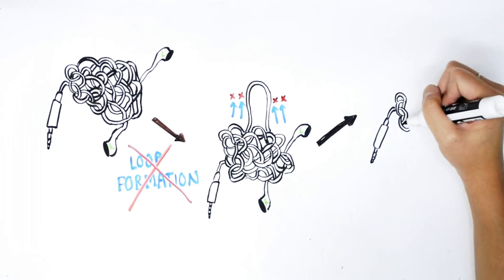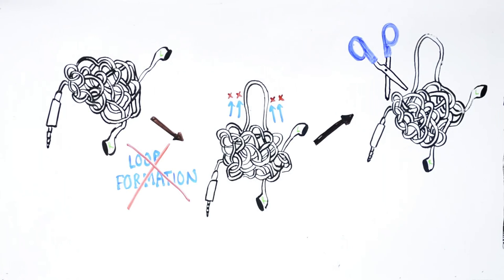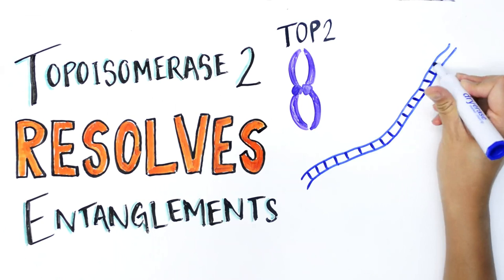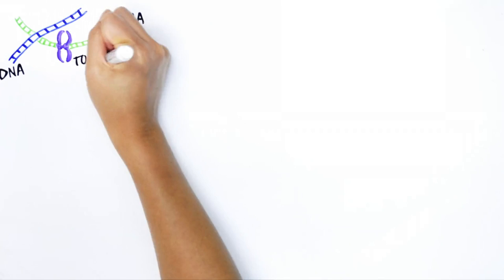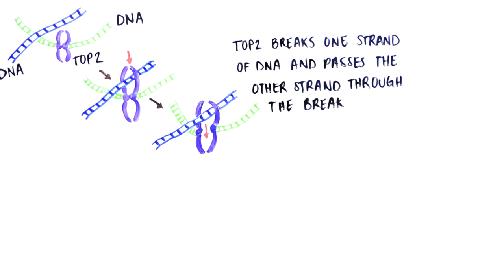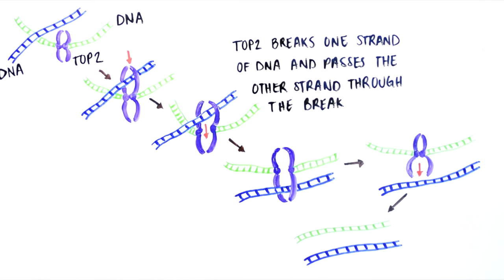The only solution to resolve DNA knots is to cut the DNA and quickly ligate it back together. This is exactly what's done by the enzyme topoisomerase 2, or TOPO2. To resolve entanglements, TOPO2 binds to one of the strands involved in the entanglement, temporarily cuts it but holds the ends. Meanwhile, TOPO2 passes a neighboring strand through the break, and after it passes, TOPO2 seals the break and leaves the DNA.